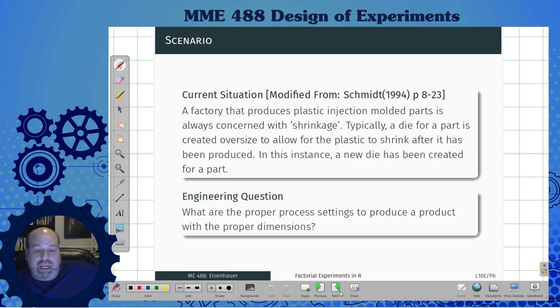So what we're going to do is take an example that Schmidt uses. There's a factory that produces plastic injection molded parts, and it's always concerned with shrinkage. Typically a die for a part is created oversize to allow for the plastic to shrink after it's been produced. In this instance, a new die has been created for a part. The engineering question was, what are the proper process settings to produce a product with the proper dimensions? So optimization is one of our goals of design of experiments.